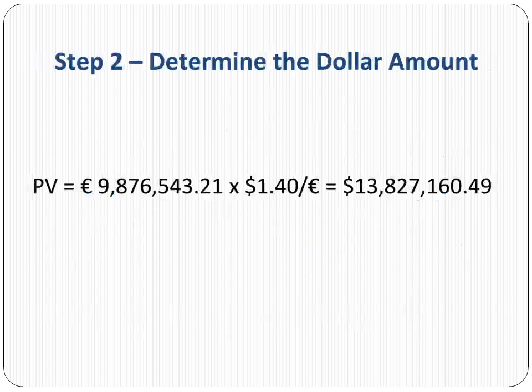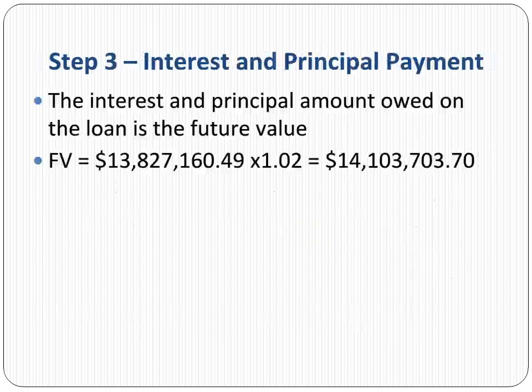To come up with a present value amount of 9,876,543.21 euros, the importer will need to come up with $13,827,160.49 at the current spot rate. The importer will borrow this amount from a local bank and pay the bank $14,103,703.70 in 90 days.